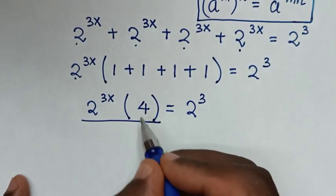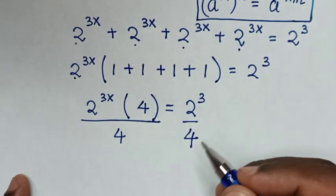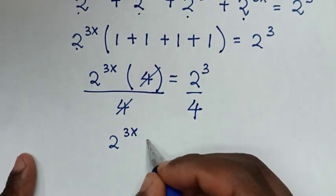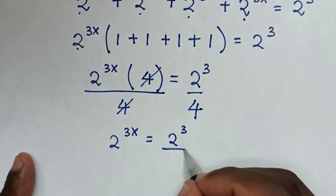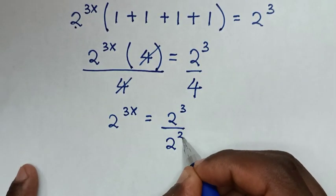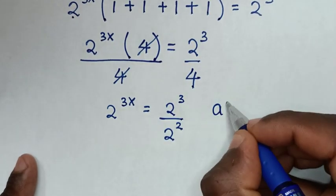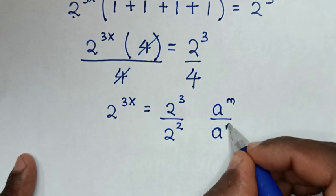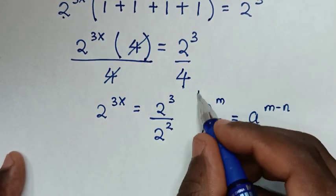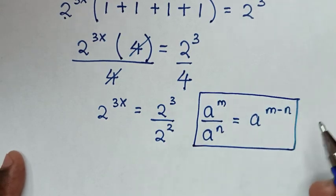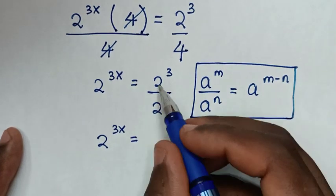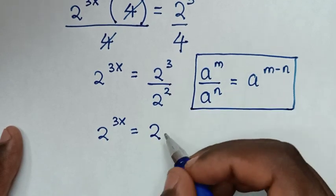Then we divide by 4 on both sides, so 4 cancels. It becomes 2 power 3x equals 2 power 3 over 4. Since 4 is the same as 2 power 2, we apply the division of exponents rule: a power m over a power n equals a power m minus n. So 2 power 3x equals 2 power 3 minus 2, which is 2 power 1.